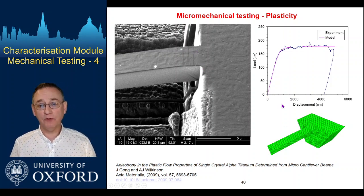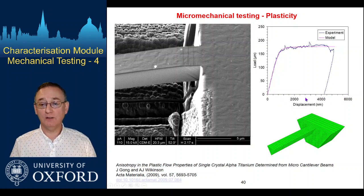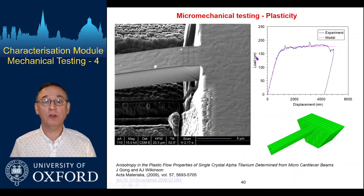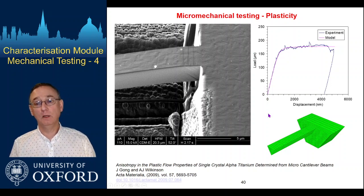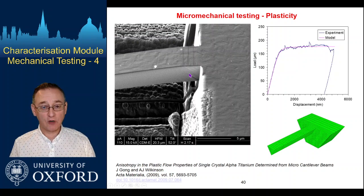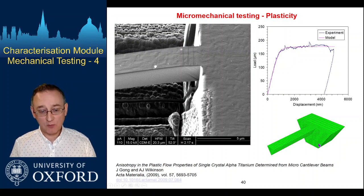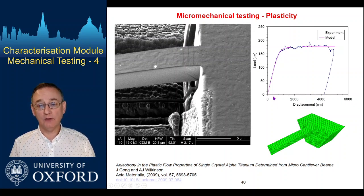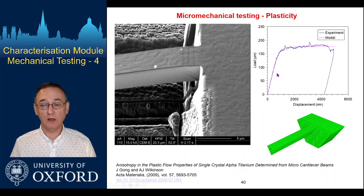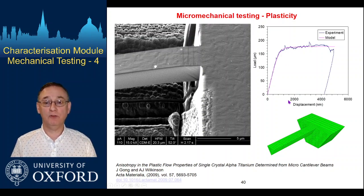What Jicheng was able to do was use the load-displacement data — displacements in the thousands of nanometers and loads down in the micronewton regime. Because there are stress and strain gradients both along the cantilever and through the thickness away from the neutral axis, the finite element model allows us to go from the experimental data and change parameters within our slip rule until we can extract the correct critical resolved shear stress for the system by fitting, running the model with very many different parameters until we find a best fit.